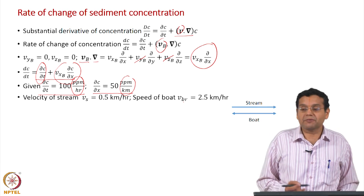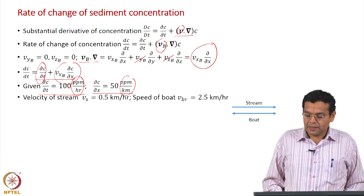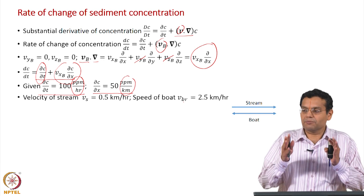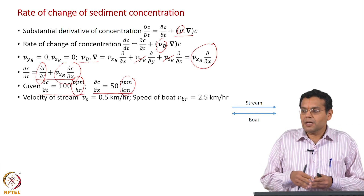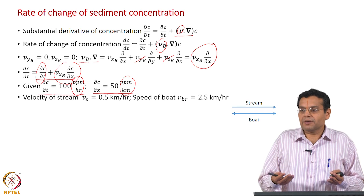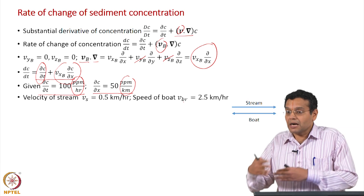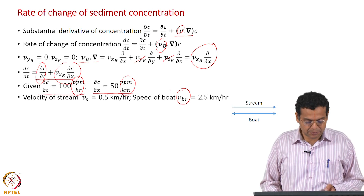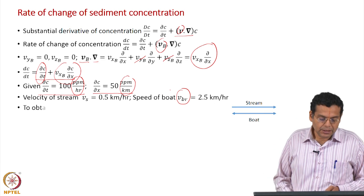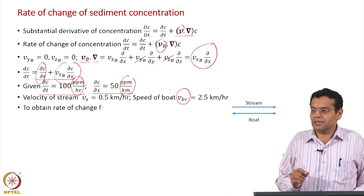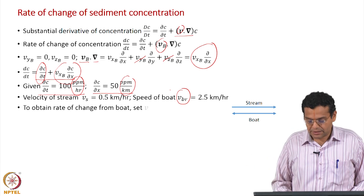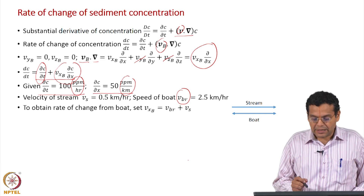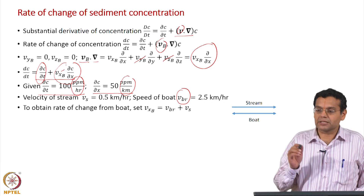Whenever you specify the speed of a boat, it is customary that it is reported relative to the stream velocity. You are moving in the stream, so all velocities of the boat are reported with respect to the stream velocity. But what you want is the velocity of the boat from a stationary point of view — as observed standing on the shore. That is why I use the notation v_br: the velocity of the boat relative to the stream velocity.